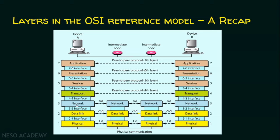transport layer, network layer, data link layer, and physical layer. Finally, the physical layer of this computer places the data on the physical medium. Once the data is received by the destination or receiver, the physical layer receives the data sent by the sender. Now this physical layer information is taken to the data link layer, network layer, transport layer, session layer, presentation layer, and finally it is handed over to the application layer.